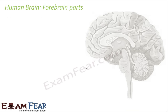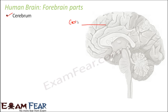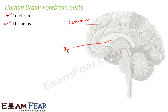Now we will talk about the forebrain in detail — its different parts which together form the forebrain. The first and most prominent part is the cerebrum. The entire large portion you see here is the cerebrum. The next part is the thalamus, present towards the base of the forebrain — located somewhere here in this region.